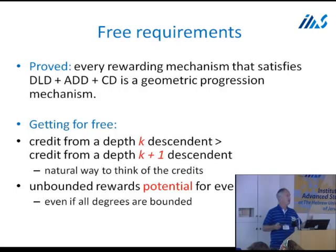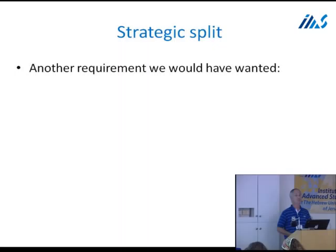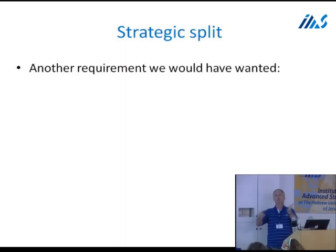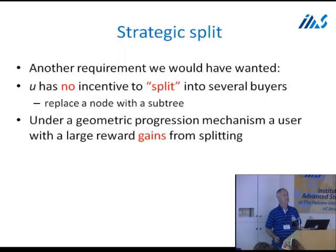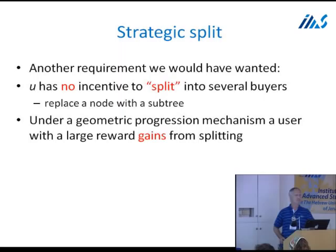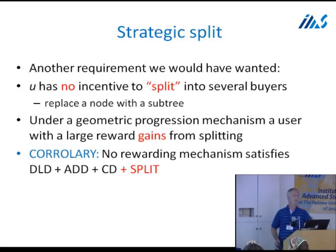This is an example of axiomatization — if you believe these axioms, the geometric progression family is the mechanism to use. But life is not that simple. Most of the technical effort has been devoted to one axiom with two flavors: split-proofness, which connects back to game theory. We want that users have no incentive to split into several fake identities — no Sybil attacks. Under geometric progression, Sybil attacks are possible. In fact, there is no rewarding mechanism satisfying depth-level dependence, additivity, child dependence, and split-proofness simultaneously.